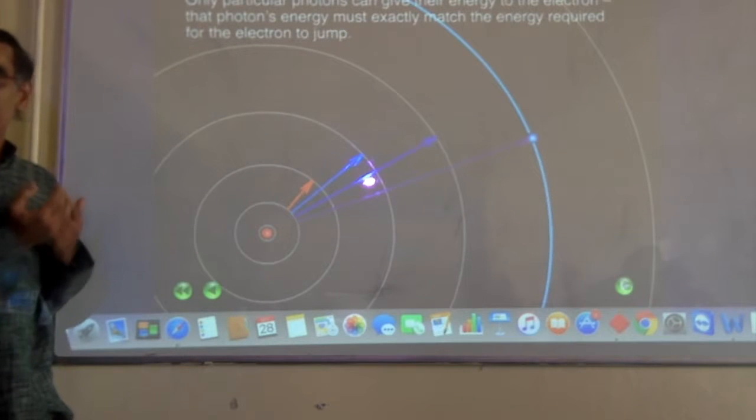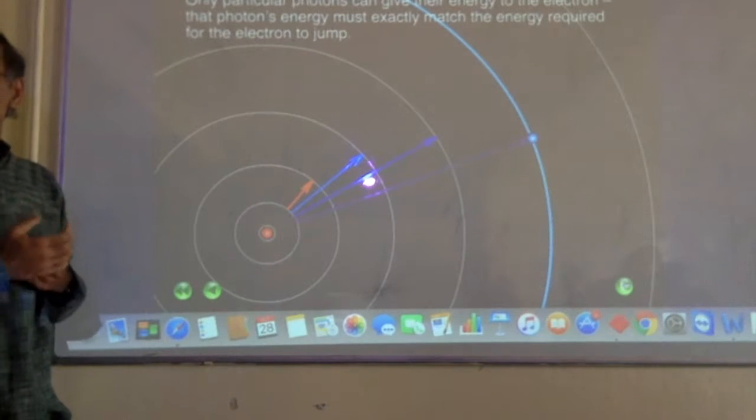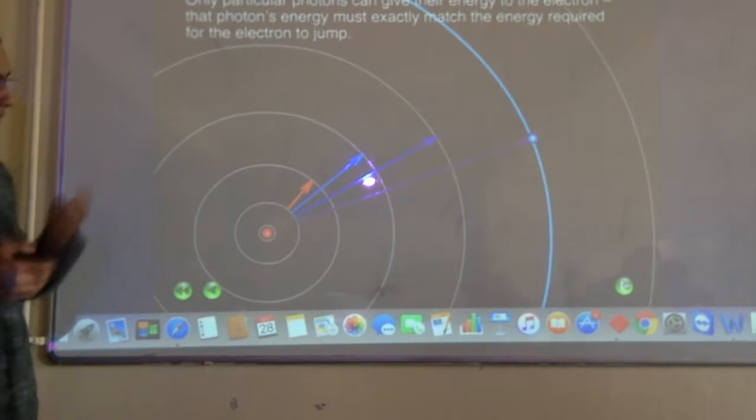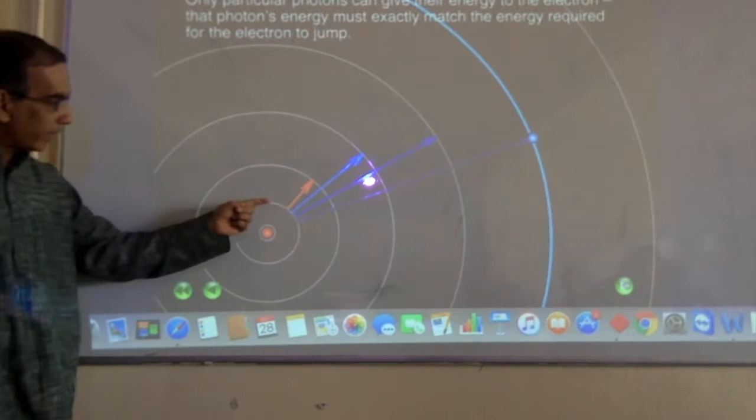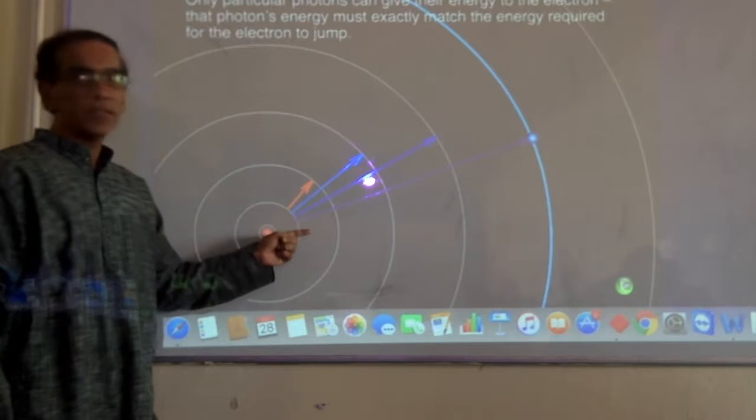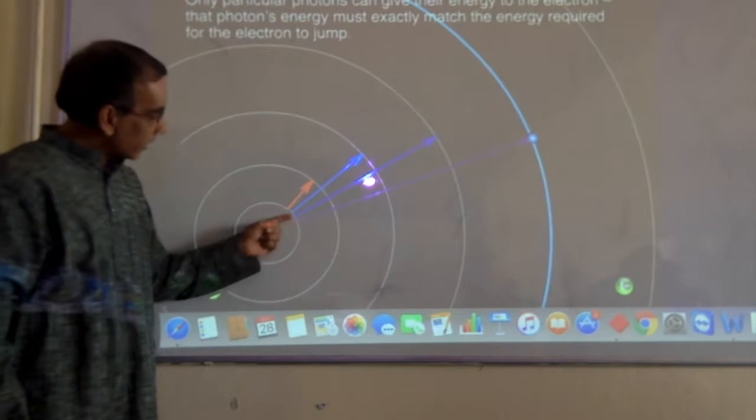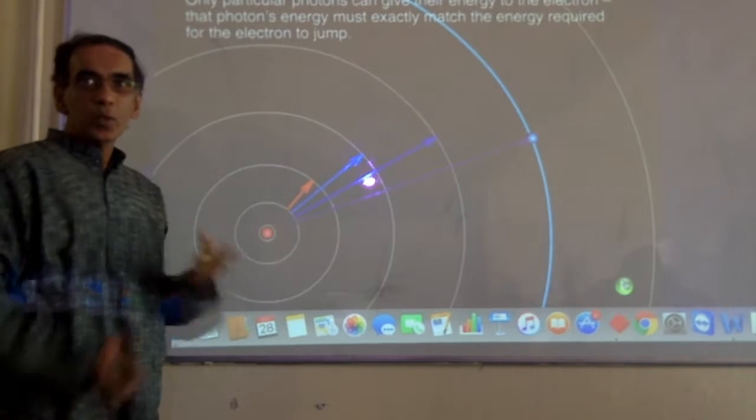From what we saw last time with the light that was being emitted from the hydrogen tube, we saw four colors: red, green, blue, and violet. And even though here we see this line looking bluish, what we saw was a green line.